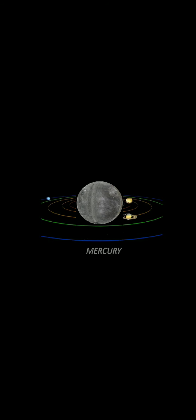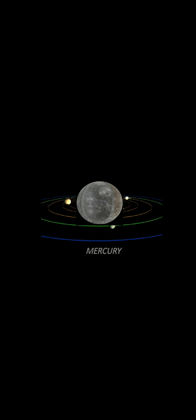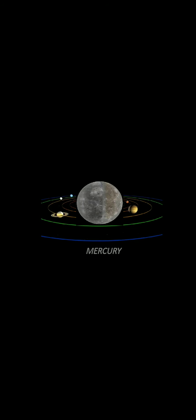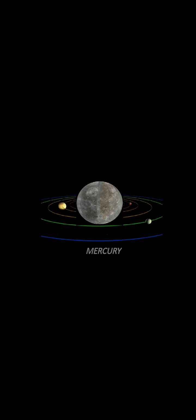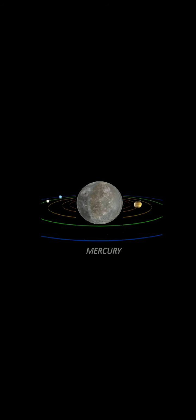Mercury is the first planet in our solar system. It is the smallest planet and nearest to the Sun. It is extremely hot during the day and extremely cold during the night. Mercury is hot during the day because it is close to the Sun. At night it is very cold because Mercury loses almost all its heat since there is almost no atmosphere to keep the warmth, and temperature falls to almost minus 175 degrees Celsius.